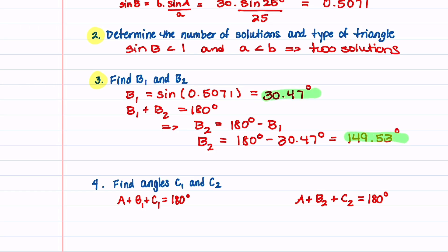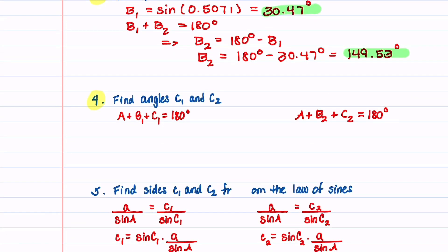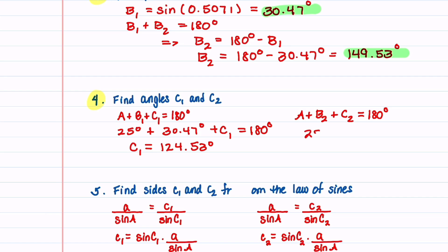We now find angles C1 and C2. With A at 25 degrees and B1 at 30.47 degrees, adding C1 gives 180 degrees, so C1 equals 124.53 degrees. For C2: A is 25 degrees and B2 is 149.53 degrees, so adding C2 gives 180 degrees, meaning C2 equals 5.47 degrees.